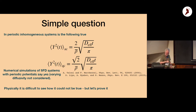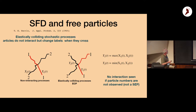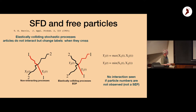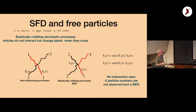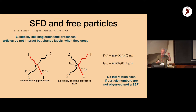One way to attack this is to note that single file diffusion and free particles are related via the Harris work on elastically colliding stochastic processes. Particles don't interact but change labels when they cross. So Y₁(t) = max(X₁, X₂) and Y₂(t) = min(X₁, X₂). If you remove the labels, it looks like a non-interacting gas — you can't see the interactions unless you track the labels.